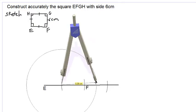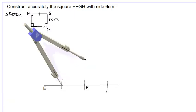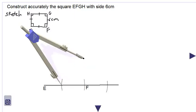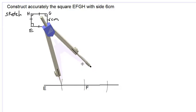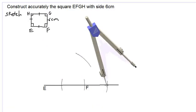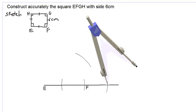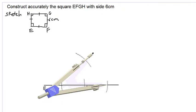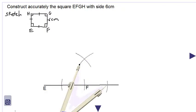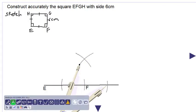We place the point of our compass at the point of intersection, stretch the arm beyond point F but still able to cut the line, and draw a construction arc above point F. Then we move the point of the compass to the other intersection point — without changing the radius — and draw another construction arc to intersect the previous one.